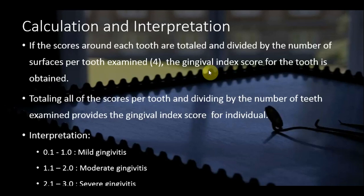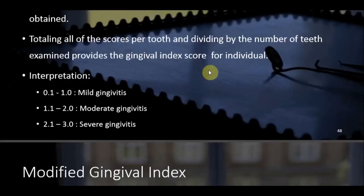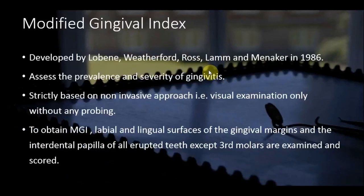Calculation: scores around each tooth are totaled and divided by four (number of surfaces). Scores per tooth are totaled and divided by number of teeth examined to give the individual's Gingival Index score. Interpretation: 0.1–1.0 = mild gingivitis; 1.1–2.0 = moderate gingivitis; 2.1–3.0 = severe gingivitis.